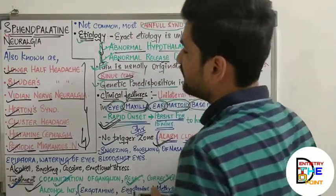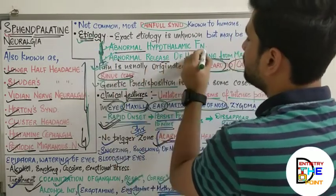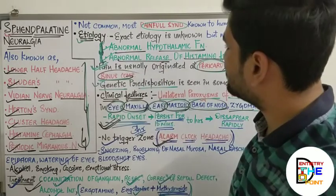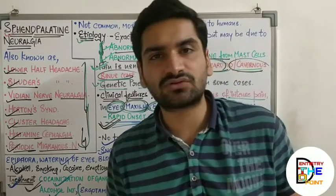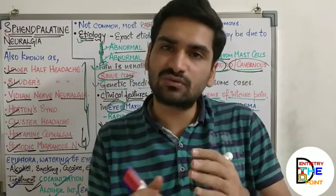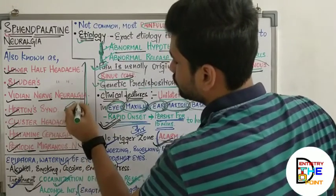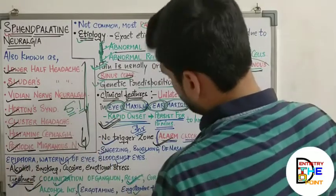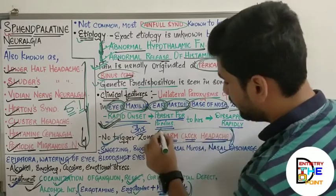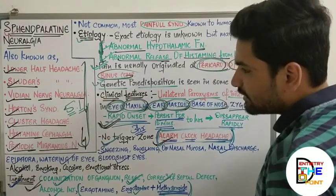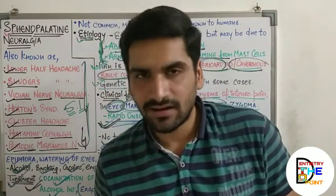To summarize the key points: remember all the other names; etiology involves abnormal hypothalamic function or abnormal histamine release from mast cells; affected sites include eyes, zygoma, ear, mastoid, base of nose, and maxilla. The condition most commonly affects patients below 40 years of age, with men affected five times more than females (male to female ratio 5:1). Pain has rapid onset, no trigger zones, alarm clock headache phenomenon, precipitating factors are alcohol, smoking, cocaine, and emotional stress.